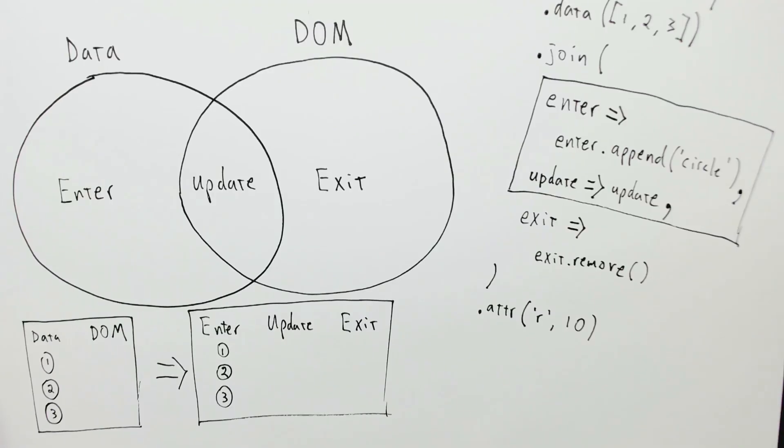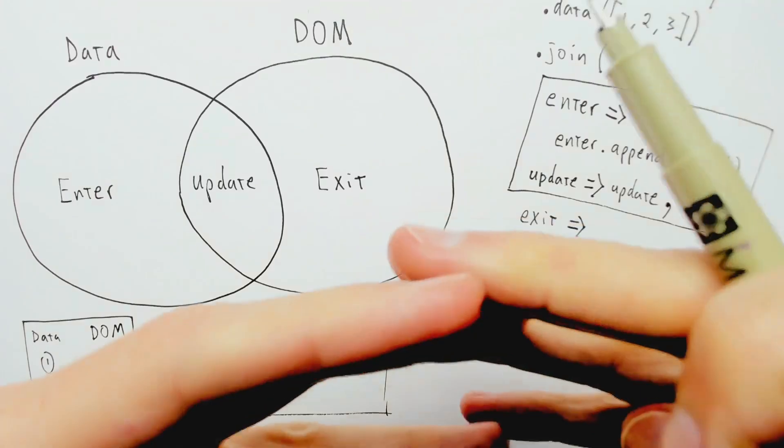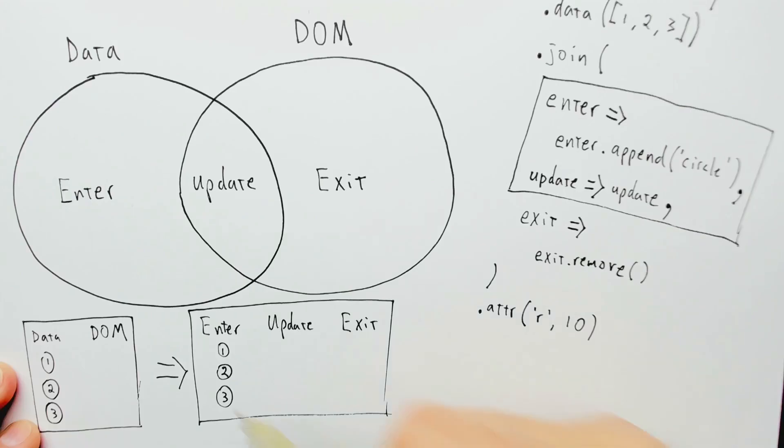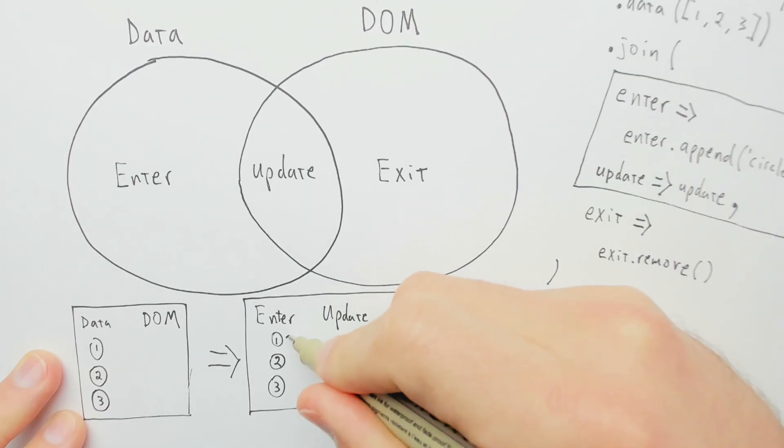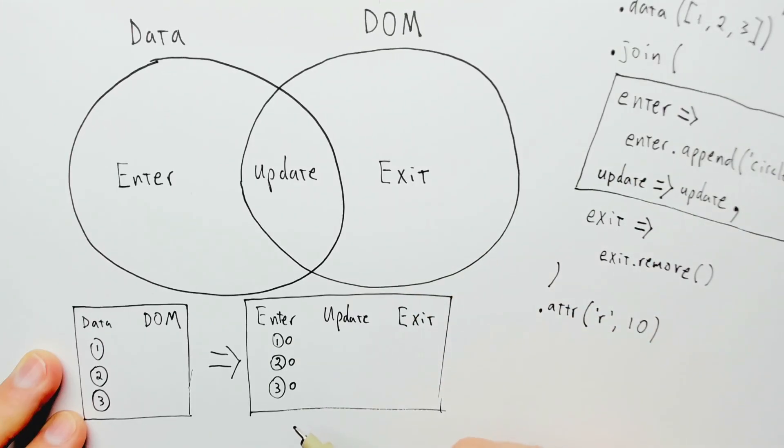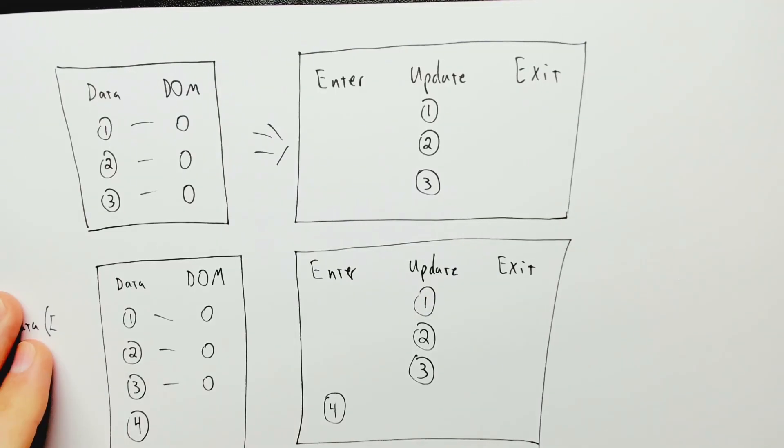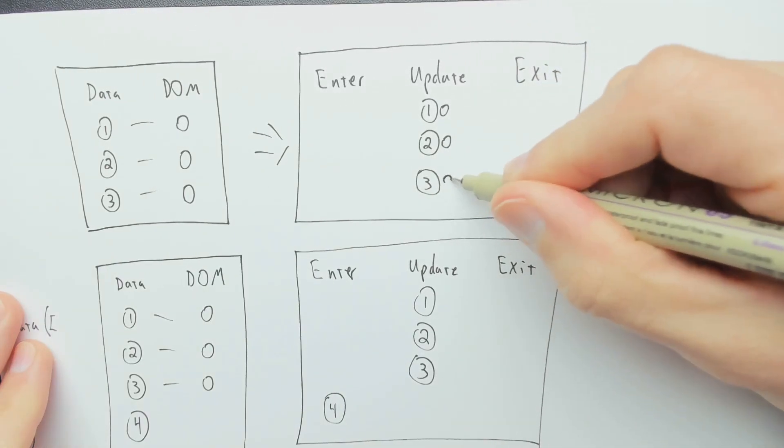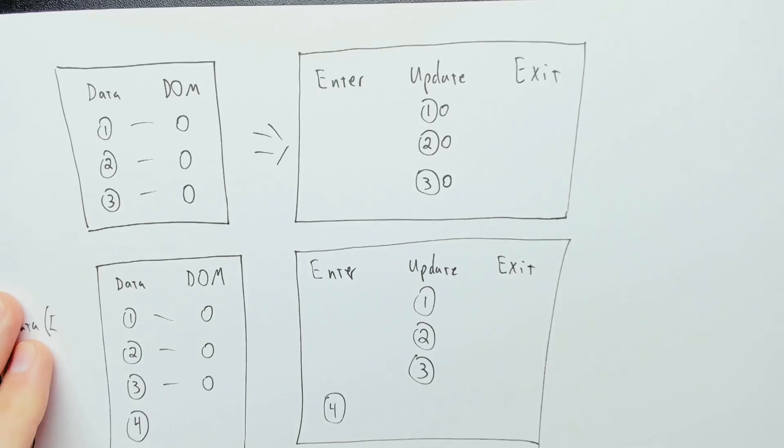But let me make these diagrams a little more precise, because these D3 selections are DOM elements and data elements linked together. After we call enter.append circle, these are actually sort of joined together, the data elements and the DOM elements. And similarly, when they're updated, the circles are associated with these elements here.